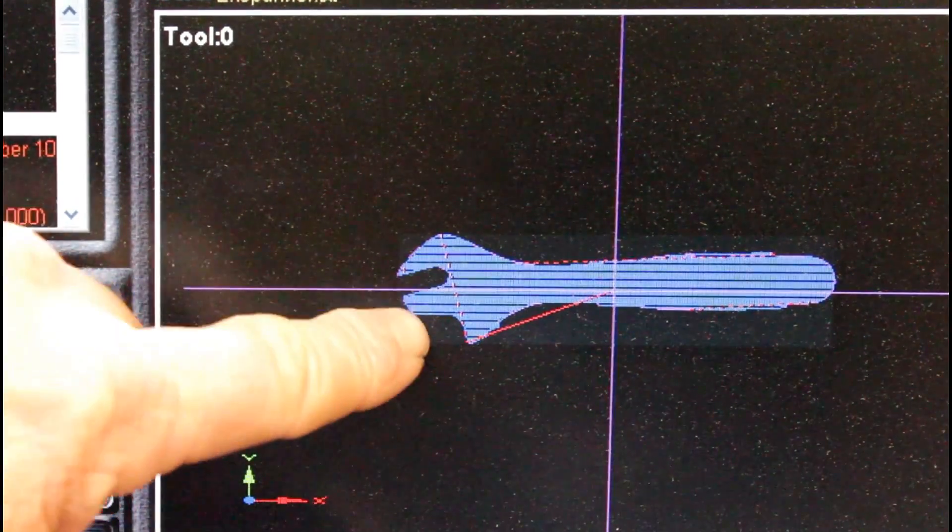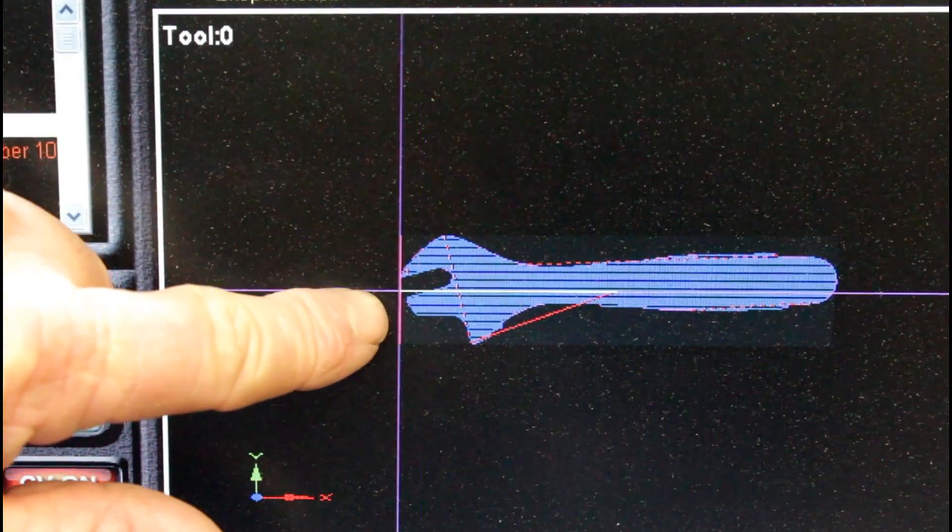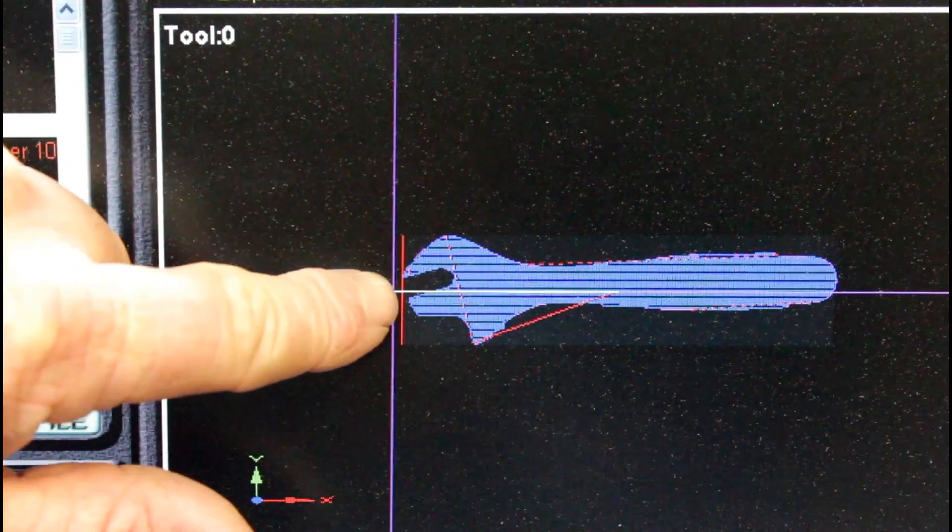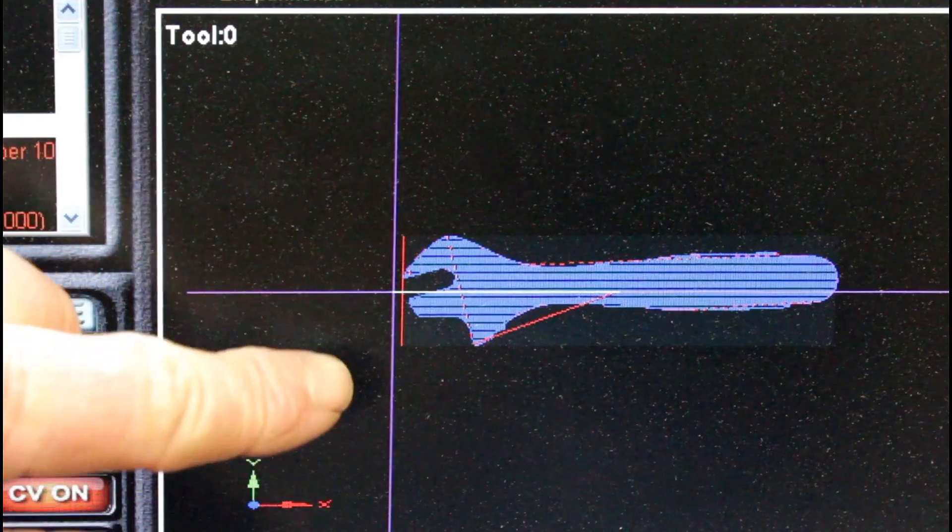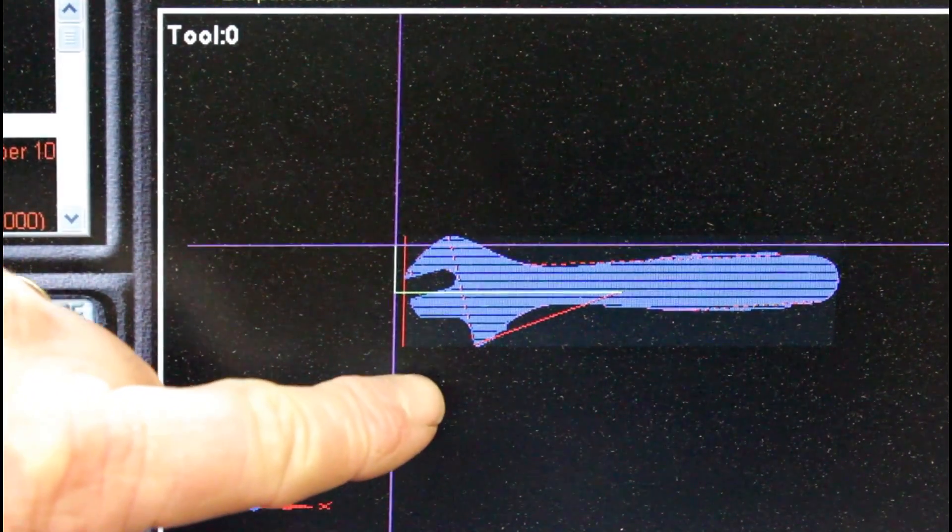If I jog my router, I can see where the cutter is. If I go outside the boundary of my cut, a red line appears. This is true in both the X and the Y direction.